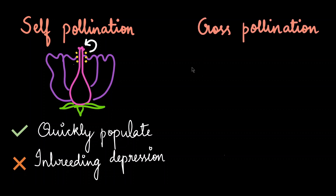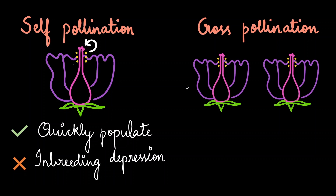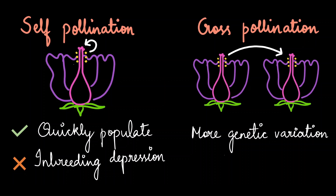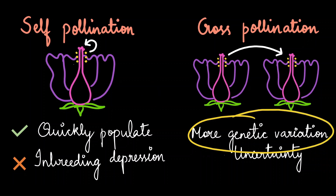Cross-pollination is the process where pollen from one flower pollinates the stigma of another flower of the same species. The advantage is that progenies have more genetic variation. The disadvantage is that cross-pollination can be uncertain due to the lack of another flower of the same species nearby. Despite self-pollination being a simpler option, most flowering plants prefer cross-pollination because genetic variation helps progeny survive better.